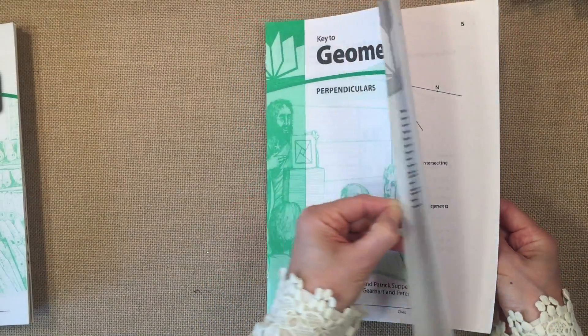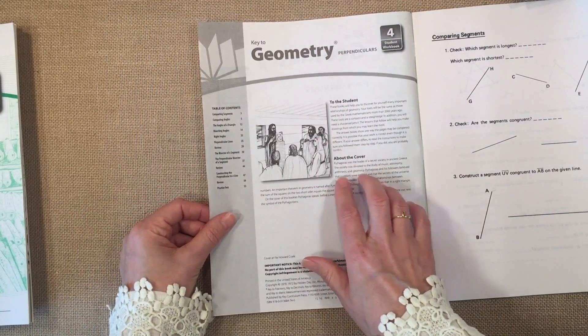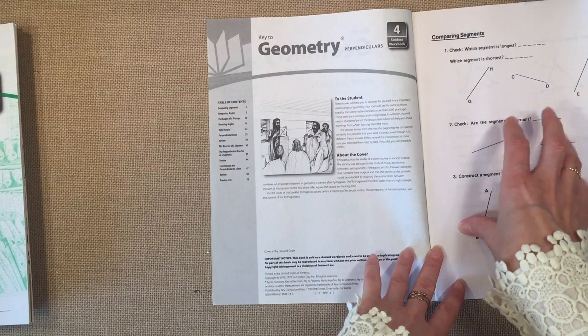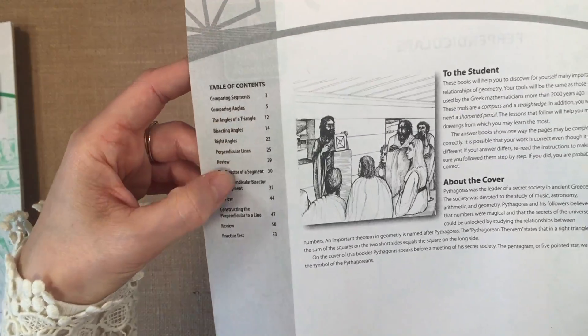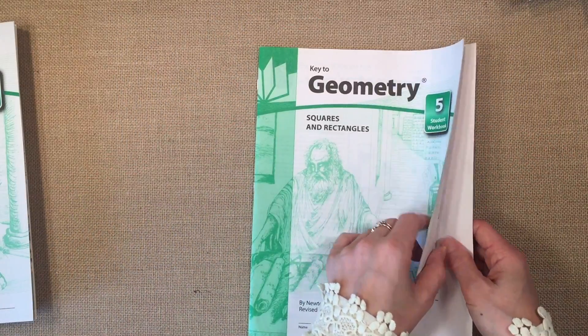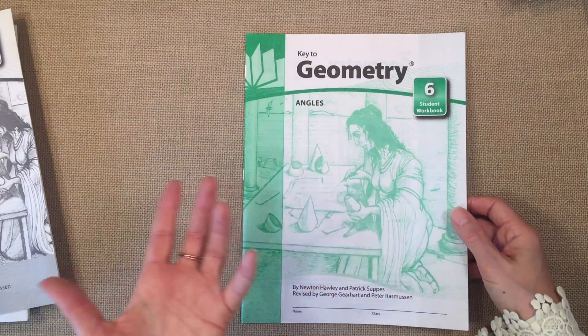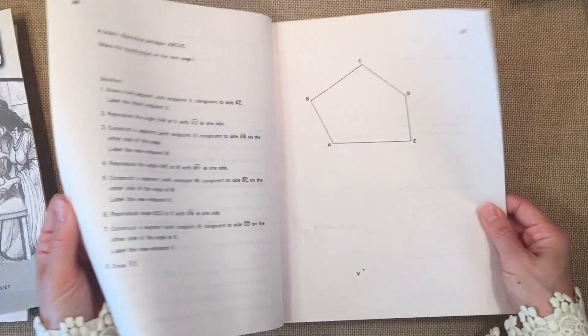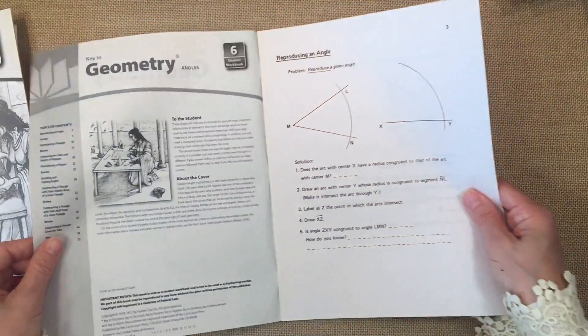Number four is perpendiculars. And what's also neat about the curriculum, too, is that the cover art on each of the workbooks actually relates to the content of the workbook. And so it will tell you a little bit about the cover art. And then there's some information for the student as well. And of course, there's a table of contents on the side for each workbook. Workbook number five is squares and rectangles. And you will need a compass for this. We bought our compass from an office supply store. We did buy a really nice sturdy one that has lasted now for three kids and probably my fourth kid. So I would say invest in a good one to begin with, and it will last you for all of your homeschooling journey.